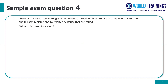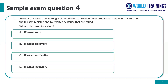Question four. An organization is undertaking a planned exercise to identify discrepancies between IT assets and the IT asset register and to rectify any issues that are found. What is this exercise called? A: An IT asset audit. B: IT asset discovery. C: IT asset verification. D: IT asset inventory.